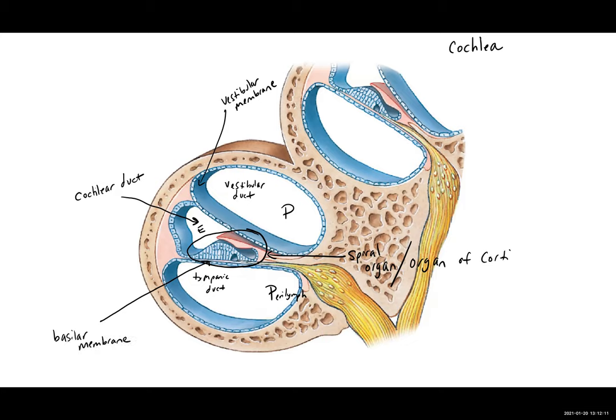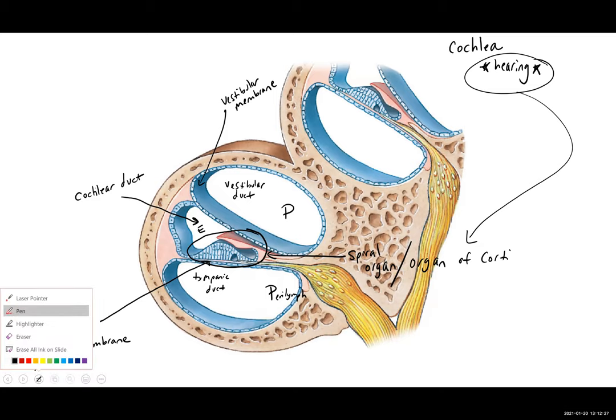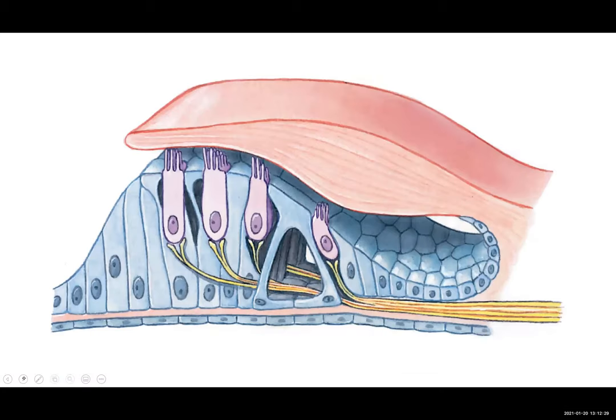The cochlea is involved in hearing. This is the part of the inner ear that's involved in hearing. Specifically, the organ of corti or the spiral organ is where that information is detected.